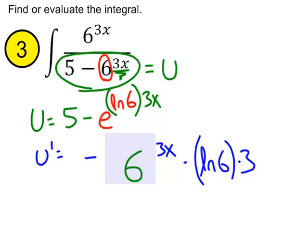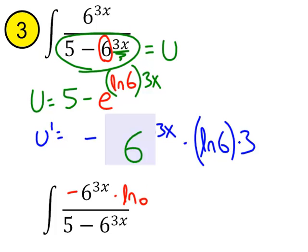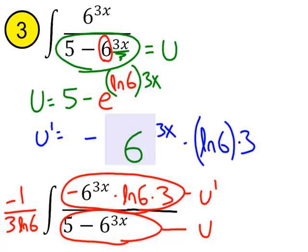Let's scroll down just a tiny bit here and let's rewrite the original integrand. We'll copy this down. Let's put the negative and then the ln6 times 3 here. And, to balance it out, we'll put negative 1 over 3 ln6 out here. And, so, now we have u underneath u prime.